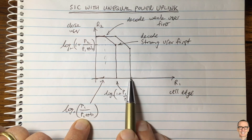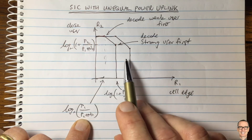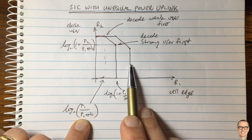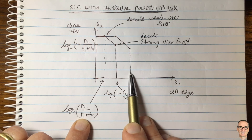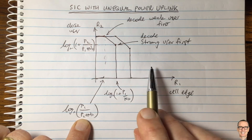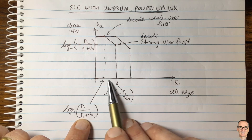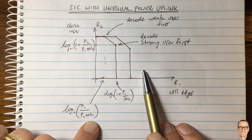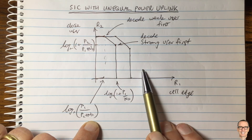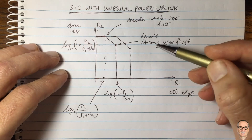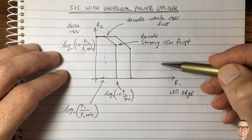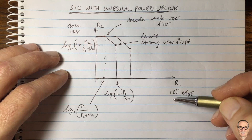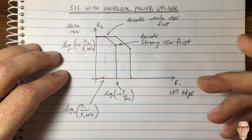So if we increase the power for our cell edge user, that's how the shape of the capacity region changes. We can still achieve operating points out on the boundary, but this rate increase for user 1 comes at a cost: the cell edge user is closest to neighboring cells, so increasing its power causes more inter-cell interference. That inter-cell interference isn't shown in this picture and needs to be accounted for in a cellular network. If this video helped you understand successive interference cancellation and the ordering of coding and cancellation, give it a thumbs up, subscribe, and check out the webpage linked below.